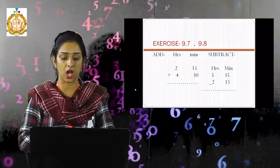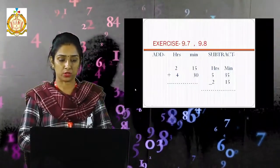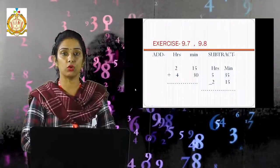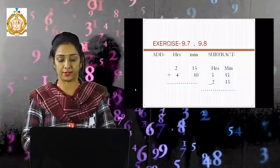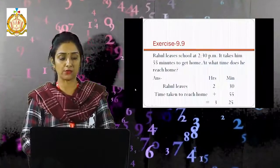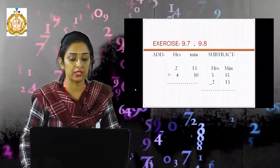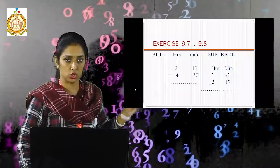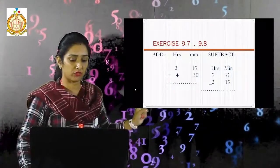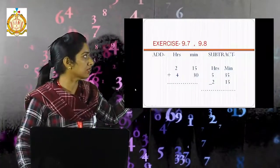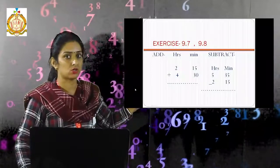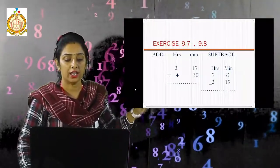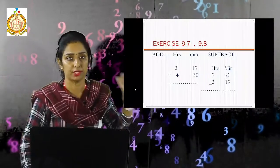Now see exercise 9.7 and 9.8 — addition of hours and minutes. For example: 2 hours 15 minutes plus 4 hours 30 minutes. Add the minutes: 15 plus 30 equals 45. Add the hours: 2 plus 4 equals 6. The answer is 6 hours and 45 minutes.